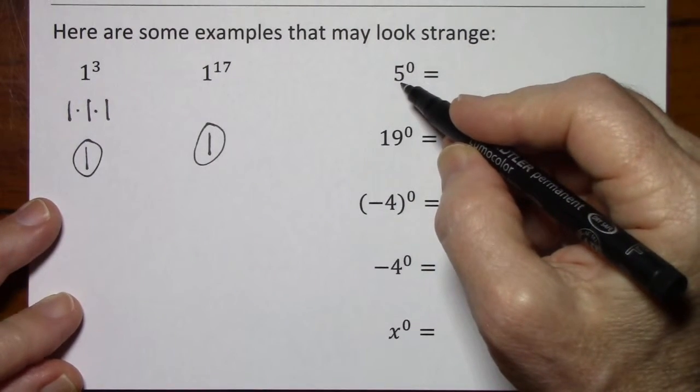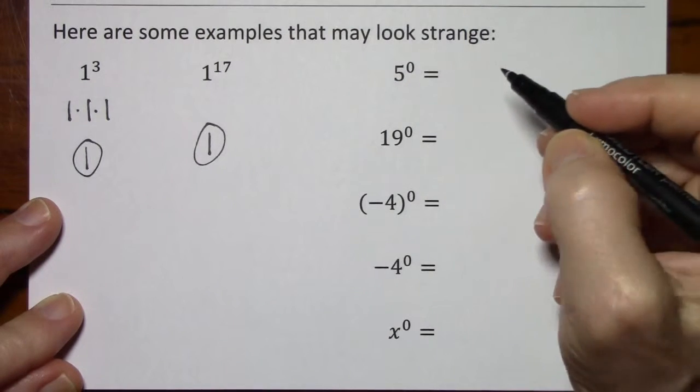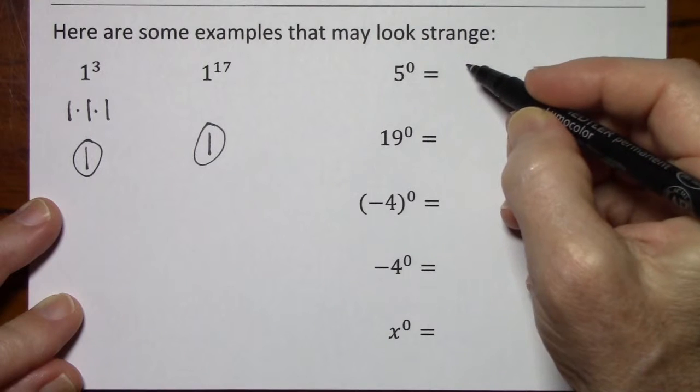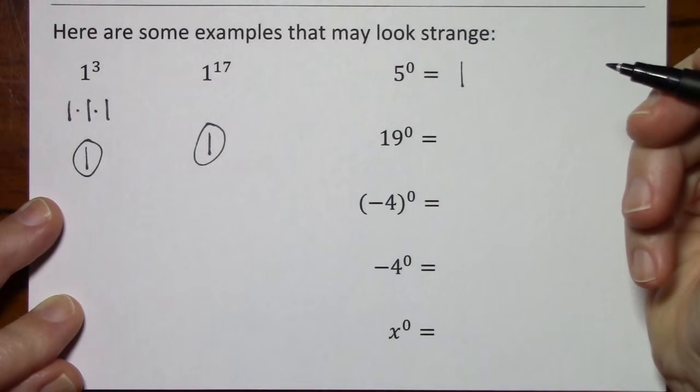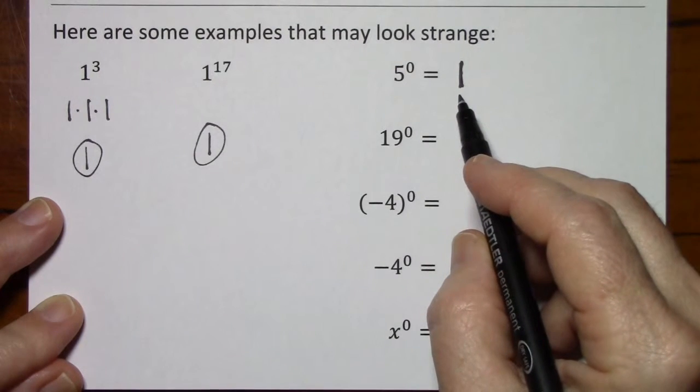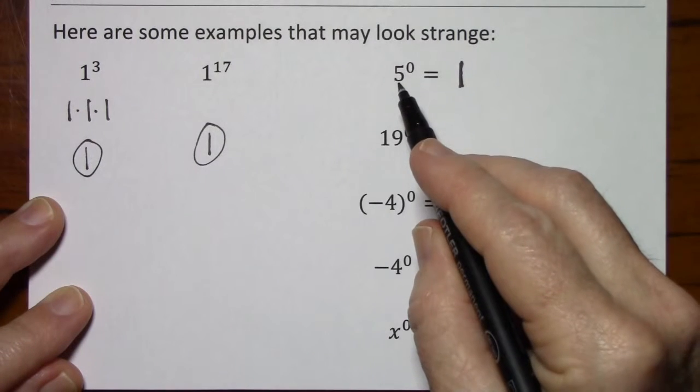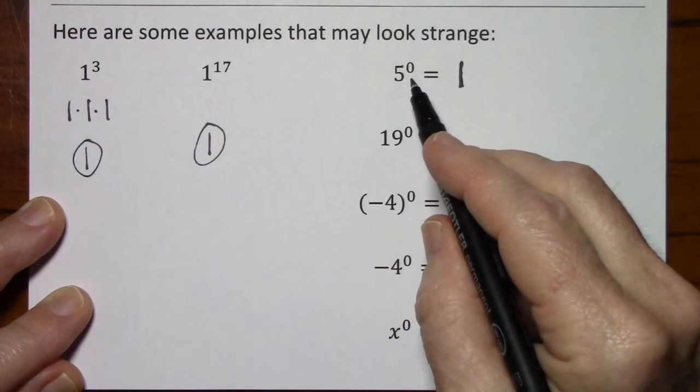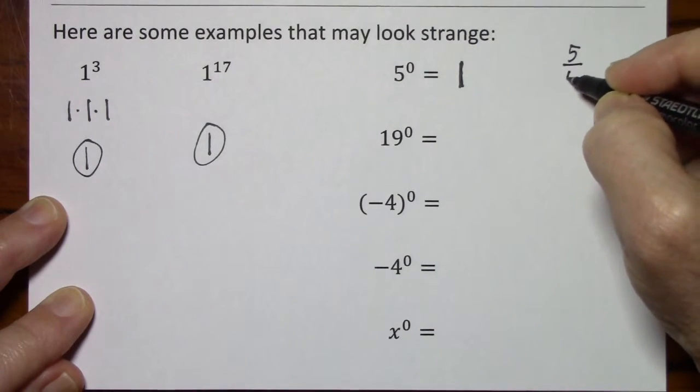Any non-zero number to the 0 power might seem like it should equal a 0, but in fact, it's equal to a 1. The reason for this is a little bit beyond the scope of this video, but I'll mention it briefly. Any non-zero number to the 0 power can be thought of as that number over itself.